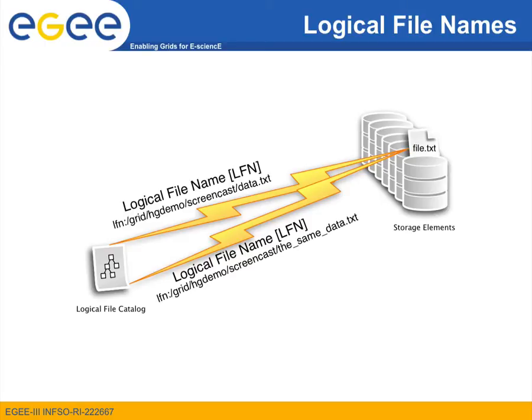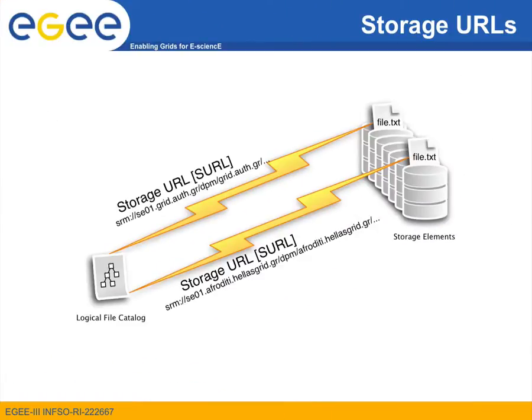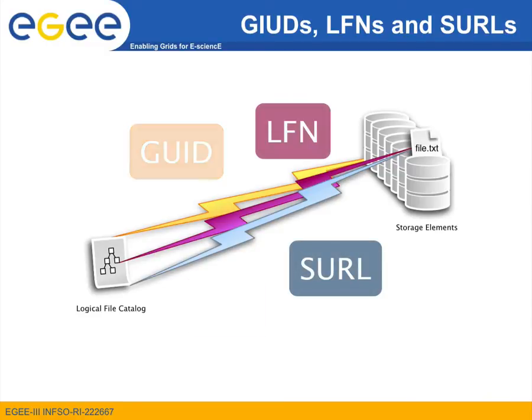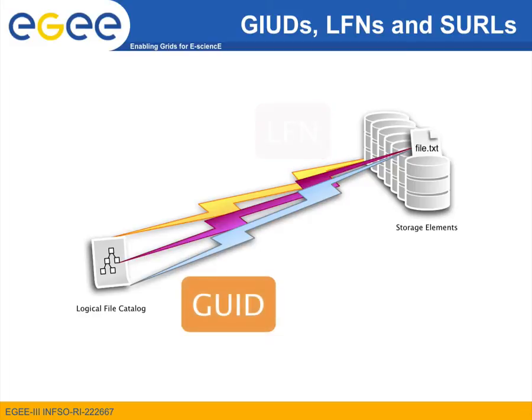Storage URLs point to the exact location of a file on the Grid. So for each replica or instance of a file on the Grid, there is exactly one Storage URL. Storage URLs are, however, once again impractical, so we prefer not to use them. As a final comment, notice that regardless of which identifier one may use to refer to a file, the Logical File Catalog service is used to make that reference.